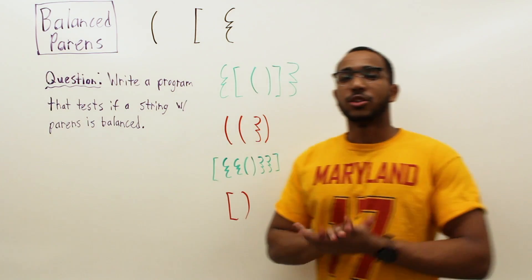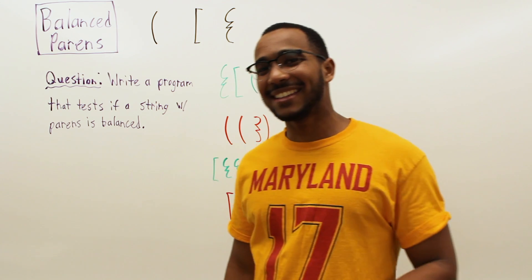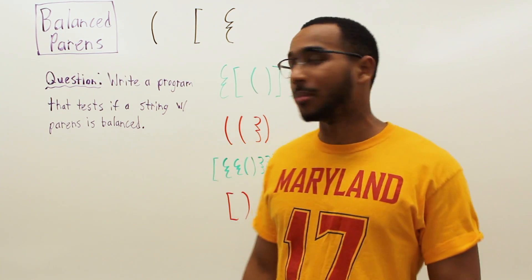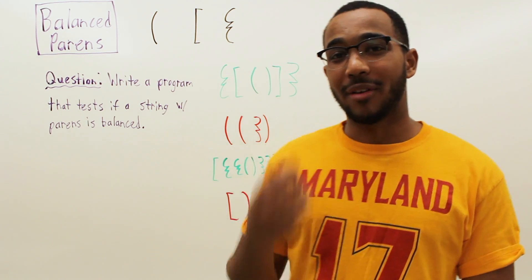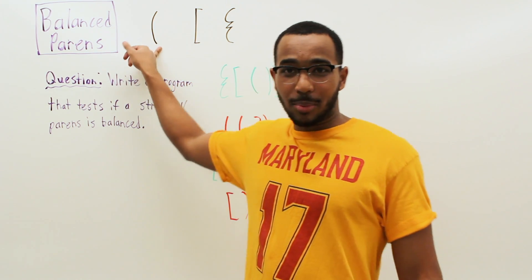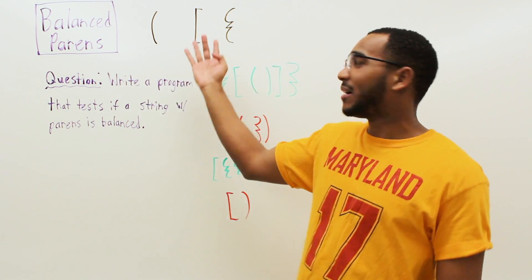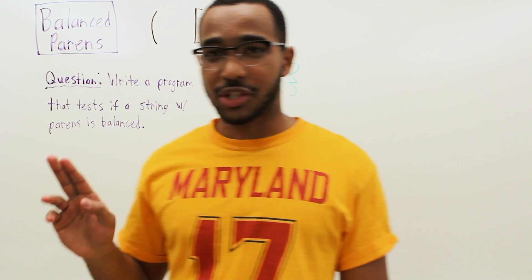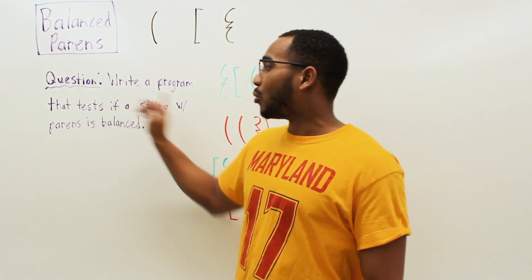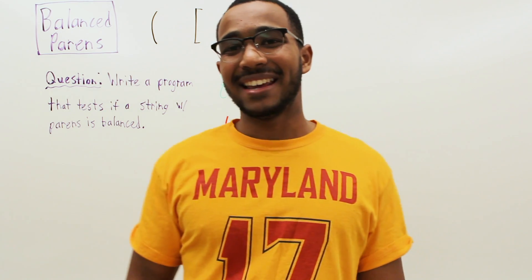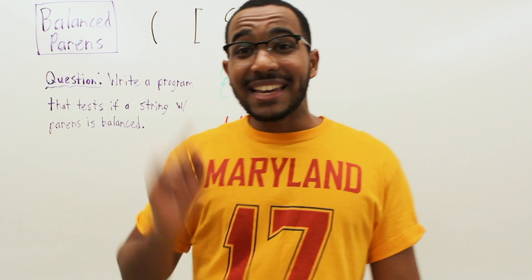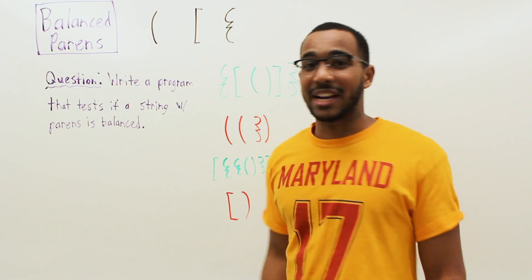Today we have a classic stack problem — this is a textbook problem called balanced parentheses. Sometimes you get this problem with just a single parentheses type, but in this problem we have three types of brackets. The way we solve this does not change; it's just that we now have three types of parentheses. The question is: write a program that tests whether a given string of parentheses is balanced.